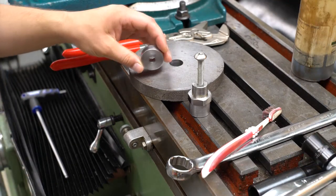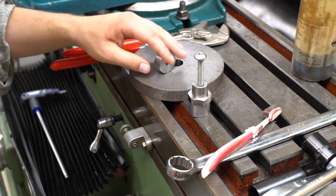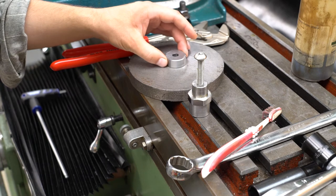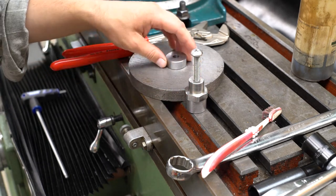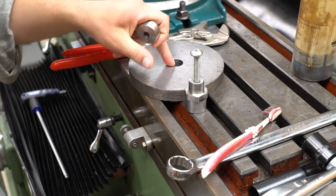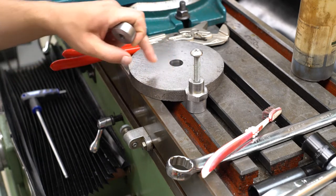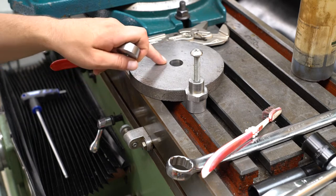So I also made a nice thick washer to press the plate down when it goes on the fixture, so it's just time to assemble it and turn down the outside and possibly face one of the sides.